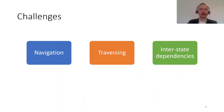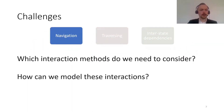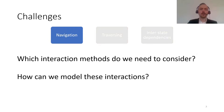The main challenges we identify are navigation, traversing, and interstate dependencies. Navigation is about which interaction methods we need to consider — for example, links, form submissions: are those simple HTTP requests or can we model them as forms? And JavaScript events — how do we model these and interact with these objects?